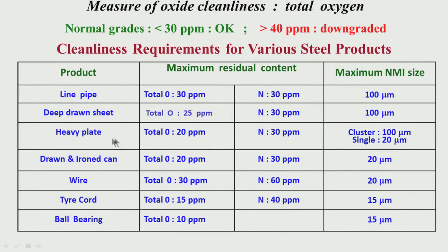Let us go to heavy plate, which is important in process industries, bridges, and various other applications. Here the oxygen requirement is more stringent at 20 ppm, nitrogen 30 ppm. The cluster of inclusions is capped at 100 microns, but for a single inclusion it is only 20 microns. So the requirements for heavy plates are quite stringent.